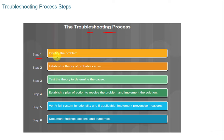Step one: identify the problem. For example, you walk up to a computer and it's not turning on — the problem is the computer will not turn on. Step two: establish a theory of probable cause. The theory might be that the power is turned off. Look around — is there power to the entire building, or is it just that computer? Check if the computer is plugged in. Step three: test the theory to determine the cause. Check the power cable at the back — was it pulled out of the wall? Did something trip a breaker?